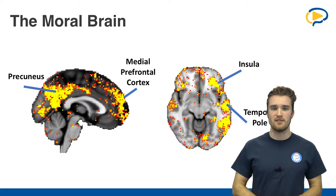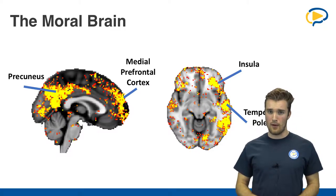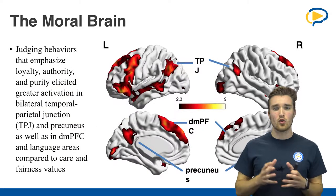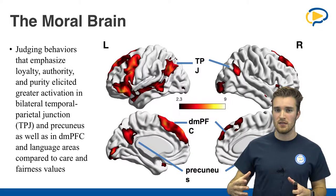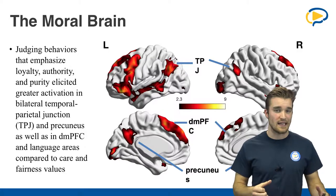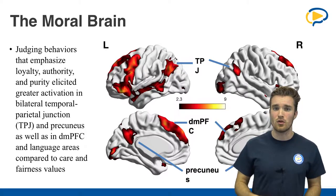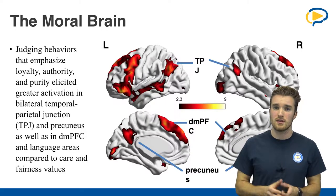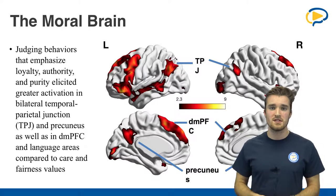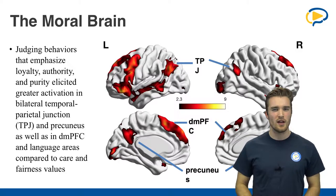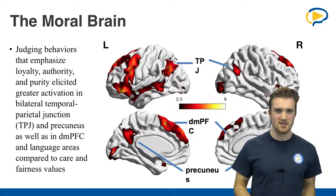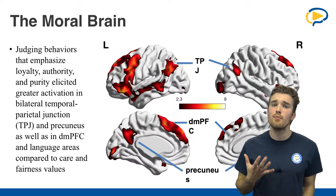We did one last analysis. We can group moral values into a category that focuses on group cohesion, hierarchy structures, and cleanliness — these are called binding moral domains. And there are also the individualizing moral domains — care and fairness — which stress the importance of individual freedom. We know from the literature that conservatives and liberals value these two different categories differently. Conservatives value binding domains more strongly, and liberals value the individualizing domains more strongly.